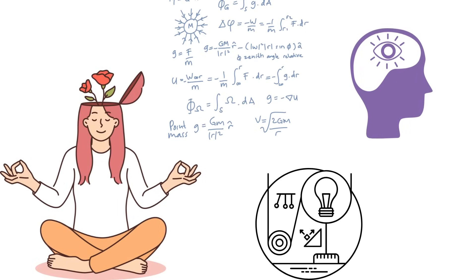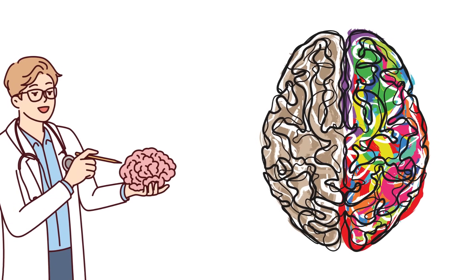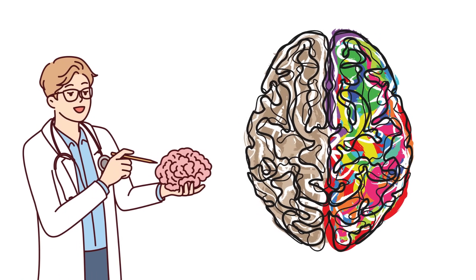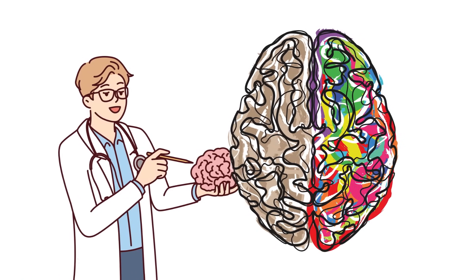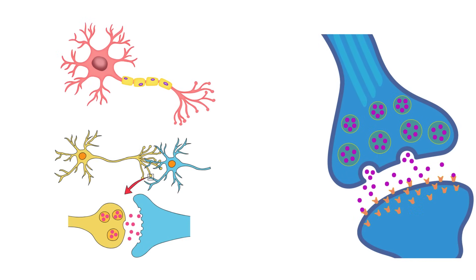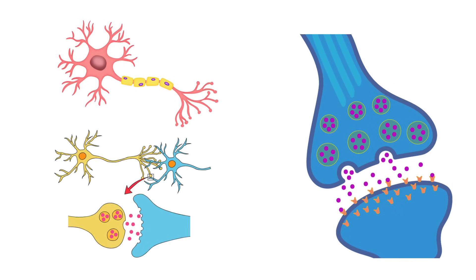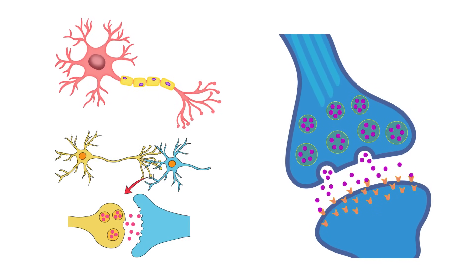Consider your brain for a moment. It's a complex organ composed of billions of neurons, each firing in response to electrochemical signals. Every thought you have, every decision you make, is the result of these neuronal firings.